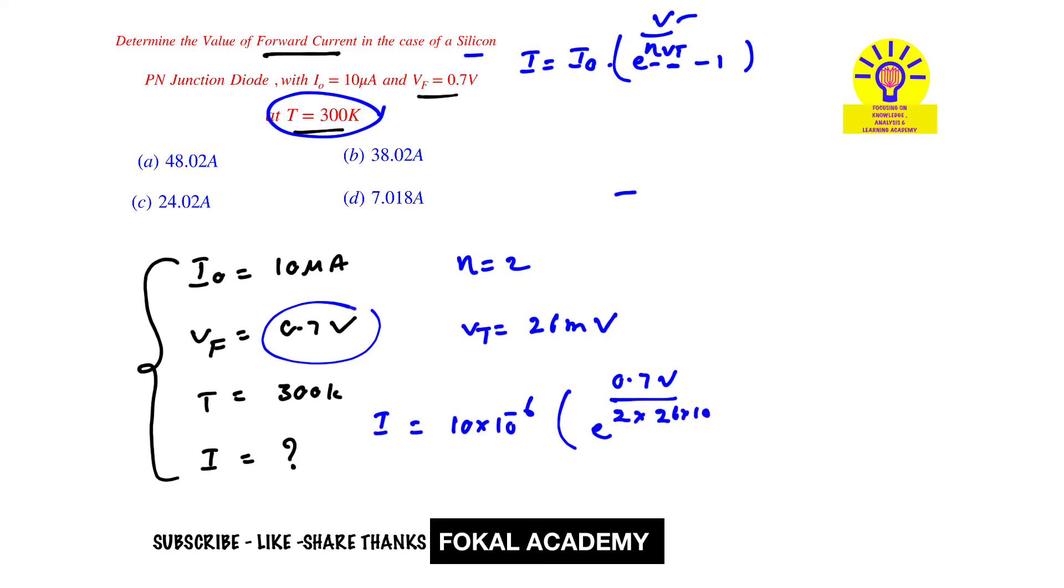By using a calculator, we get forward current I equal to 7.018 amperes. From the options, option D is the correct option. This is the process of simplification. Thanks for watching, please subscribe, like, share. Thanks.